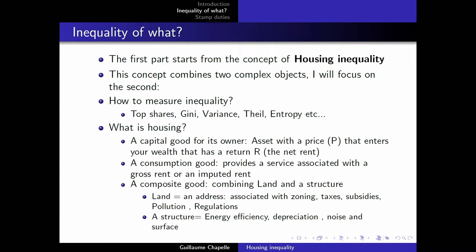Then there is the concept of housing, which is very fascinating and very complicated. It can be a capital good for its owner — just an asset with a price P that enters the wealth of the owner. So maybe housing inequality of the stock will reflect inequality of wealth. But it also has a return R, which is a net rent, and that rent is the consumption part, because housing is also a consumption good. It provides a service usually measured in national accounts by the gross rent if you're a tenant, or imputed rent if you're an owner. On top of that, housing is also a composite good composed of land — where your housing is located, the value of the parcel — and the structure.